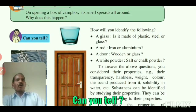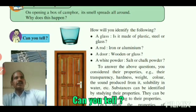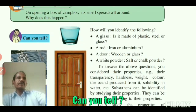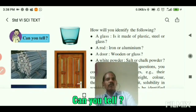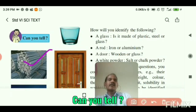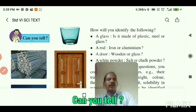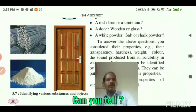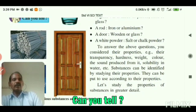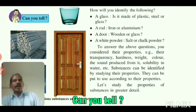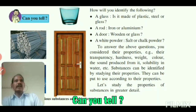Second, a rod made of iron and aluminum. If you tell a rod, it will be a bit like a rod. It is made up of iron as it is seen to be opaque and dark.